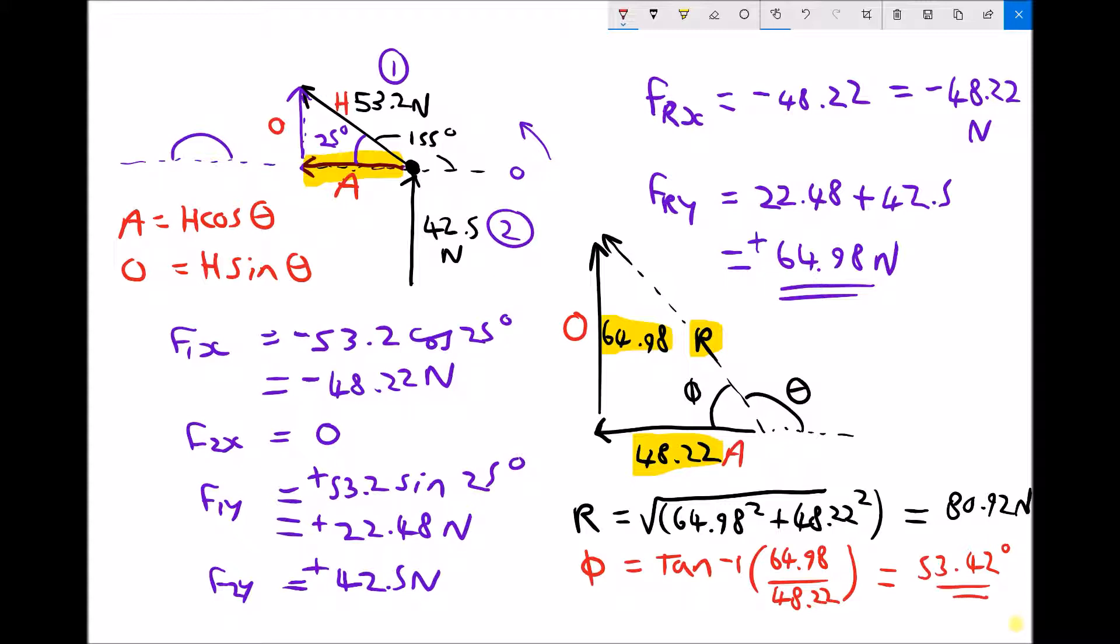And if phi, this angle inside the triangle, is 53.42 degrees, then theta is just going to be 180 minus that. So we can say theta equals 180 minus 53.42, which is 126.58 degrees.